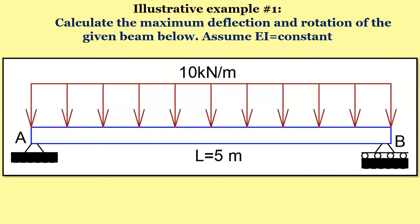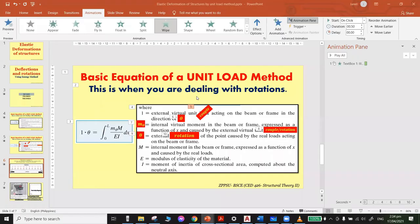Calculate the maximum deflection and rotation of the given beam. In this problem EI is constant, so we don't need to include a specific value — we just carry it as EI. We have a simply supported beam of length 5 meters with a uniformly distributed load of 10 kilonewtons per meter. Support A is a hinge and support B is a roller.